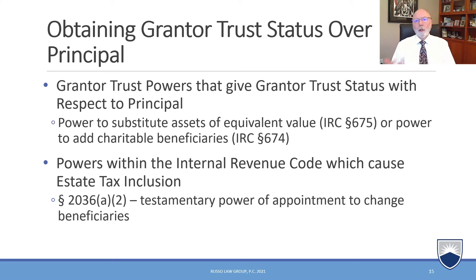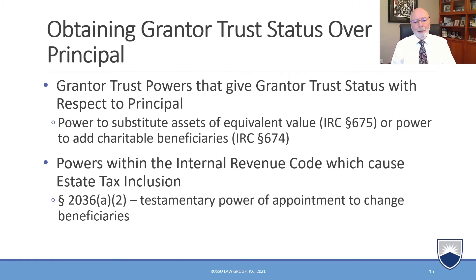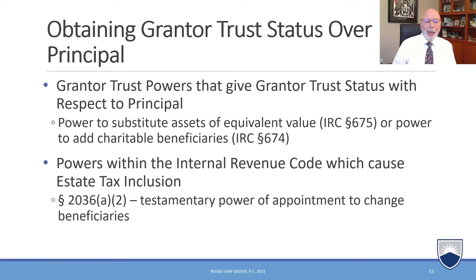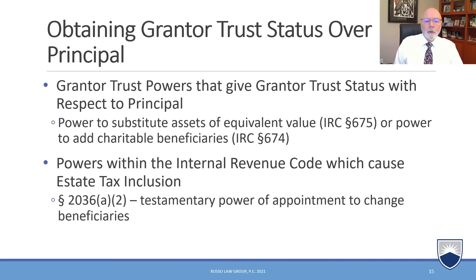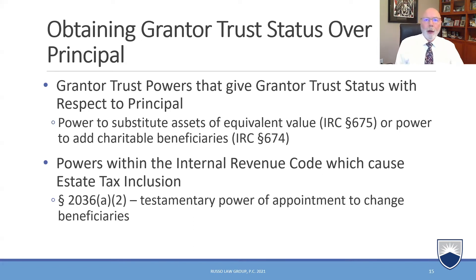If you want to create estate tax inclusion to get a step-up in basis, you'd want the assets not only funded as an incomplete gift with the grantor reporting income as a grantor trust, but also included for estate tax purposes. A testamentary power of appointment to change beneficiaries is a nice power under code section 2036(a)(2), which will cause estate tax inclusion. Special needs attorneys and elder law attorneys are familiar generally with all of these taints and how to draft these documents, and they can work with the financial advisor and accountant to ensure everybody's on the same page.